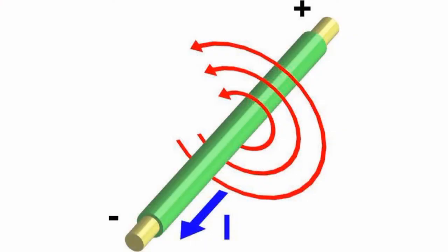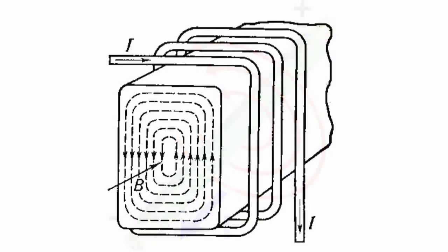Eddy currents are closed-loop electric currents induced in conductors exposed to a changing magnetic field. Unlike electric current flowing along fixed paths in wires, eddy currents are closed directly in the conducting mass, forming a vortex loop.